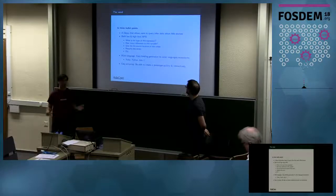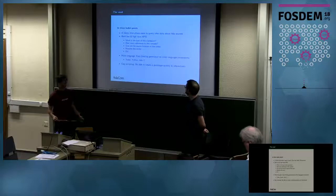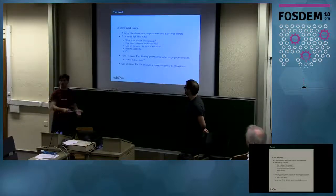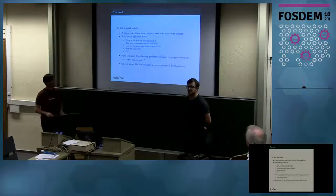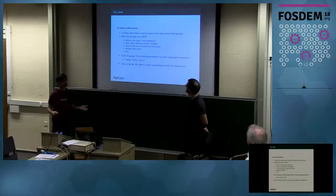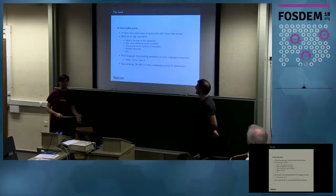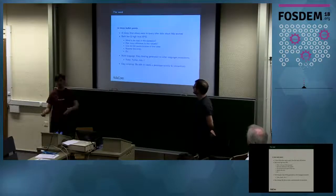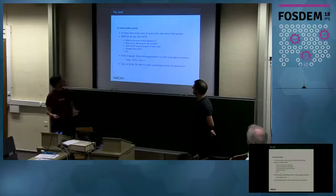By low-level, we mean small details like what is the location of this token, or what is the token under this location — things like that. We also want high-level APIs, such as: what's the type of this expression, or can you please rename this type and all use occurrences of this type.